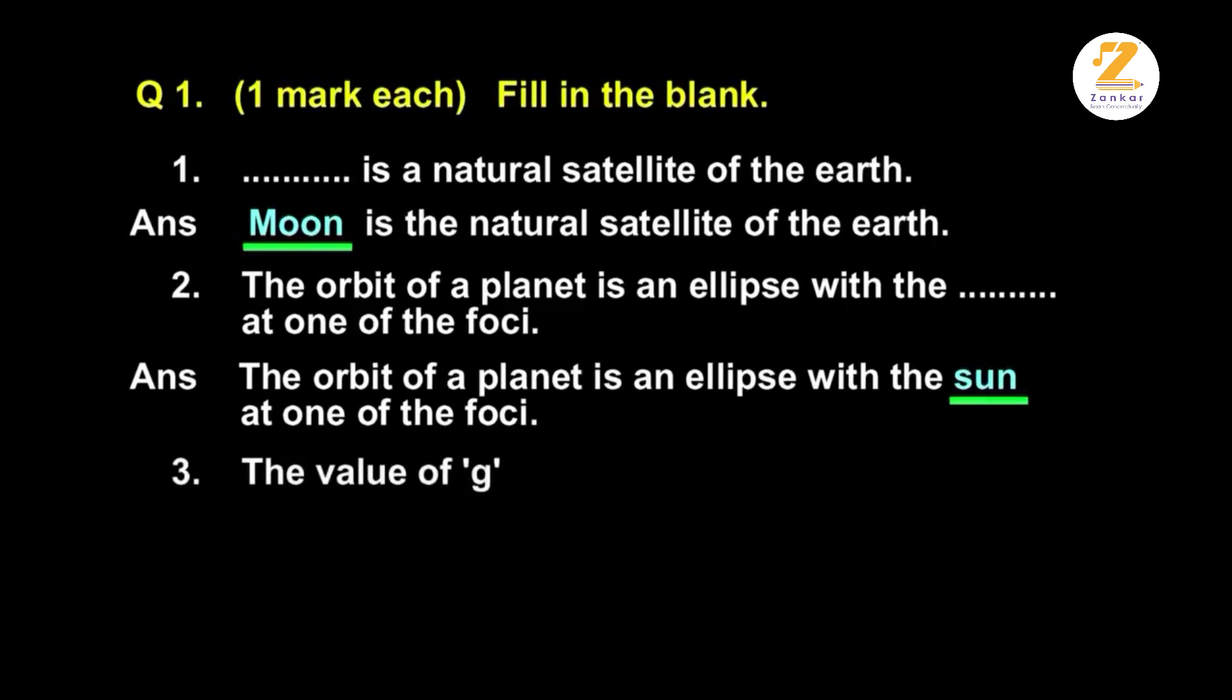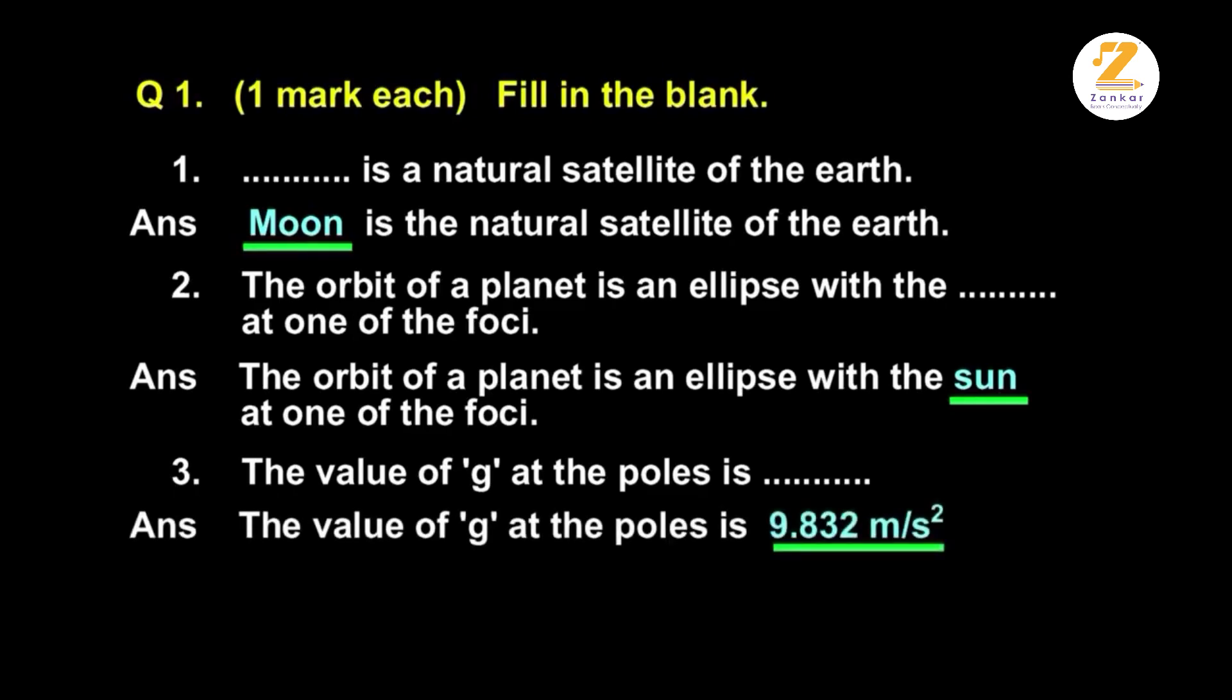The value of g at the poles is dot dot. The value of g at the poles is 9.832 meter per second square.